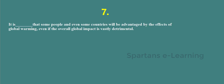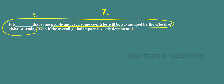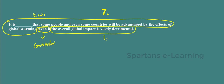Question 7: It is dashed that some people and even some countries will be advantaged by the effects of global warming, even if the overall global impact is vastly detrimental. The whole first part forms keyword one. The connector is 'even if'. And the second keyword is: the overall global impact is vastly detrimental.